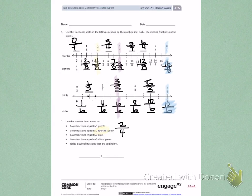On your own, find the fractions that are equal to 5 thirds and color them green. Then, write a pair of fractions that are equivalent. You know they are equivalent because they are right above each other on the number line.